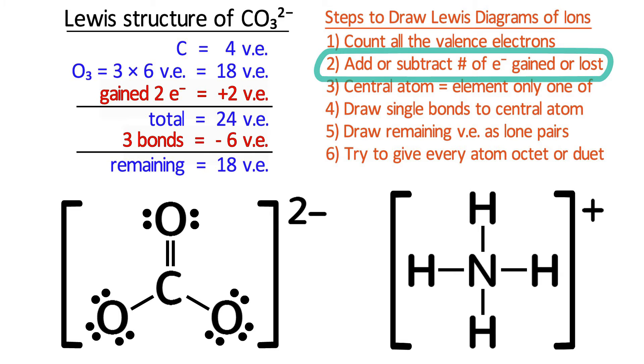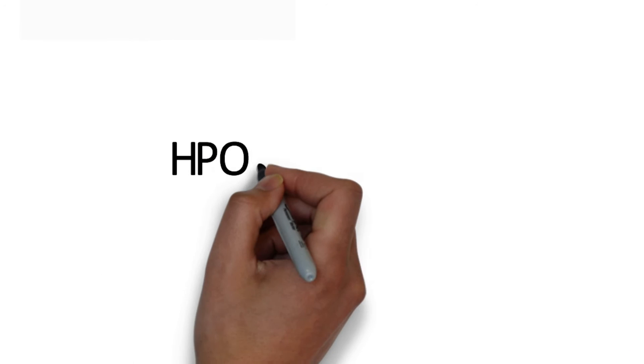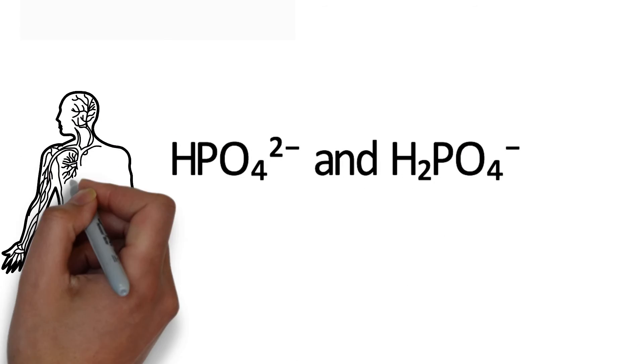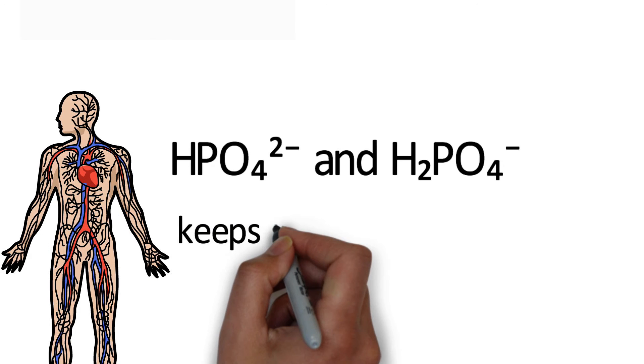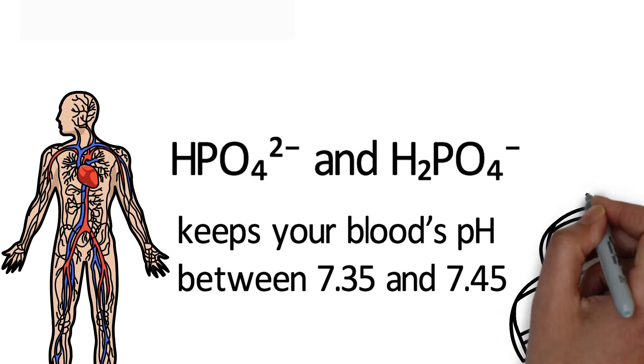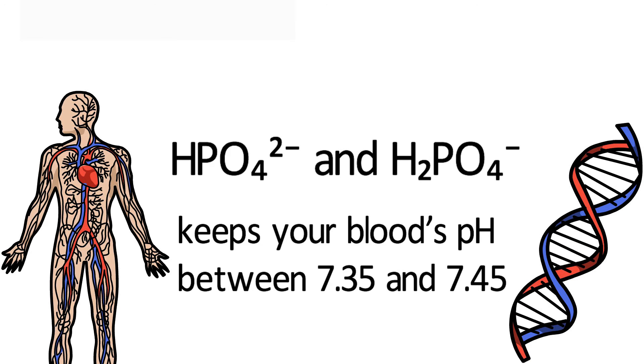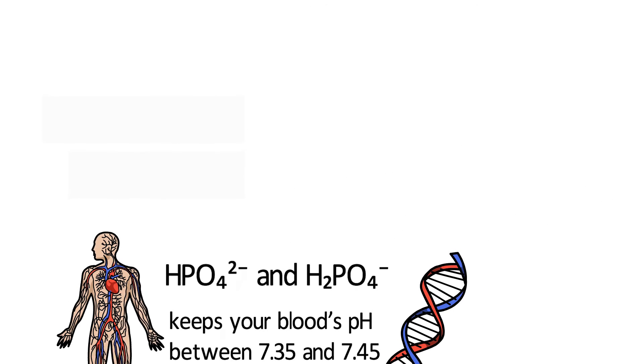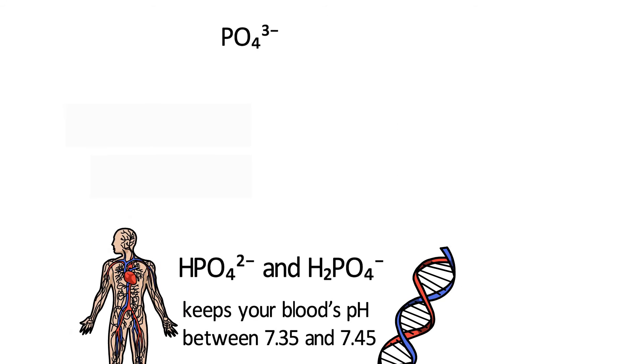Let's try one last example that is a little bit more complicated. Hydrogen phosphate and dihydrogen phosphate are components of your blood buffer system, which helps keep your blood's pH between 7.35 and 7.45. Phosphates are also building blocks for many biomolecules. We could solve their Lewis diagrams individually, but it is useful to recognize that they are both derived from phosphate. So we can figure out the Lewis structure of phosphate and then add the appropriate number of hydrogens to it. Phosphate is PO4 3-.